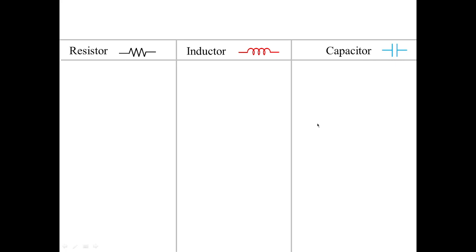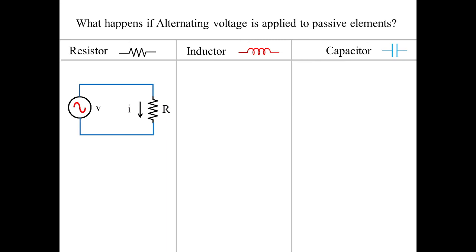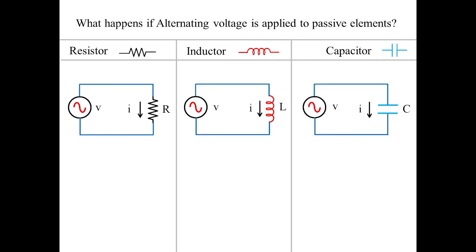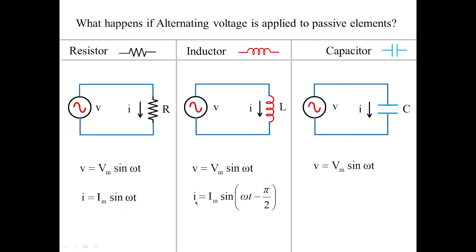In summary, across three classes on sinusoidal input applied to passive elements — resistor, inductor, and capacitor — we apply V = Vm·sin(ωt) to each. For pure resistive circuits, current and voltage are in phase. For an inductor, current lags voltage by 90 degrees. For a capacitor, current leads voltage by 90 degrees. This is the conclusion for sinusoidal input applied to pure passive elements.